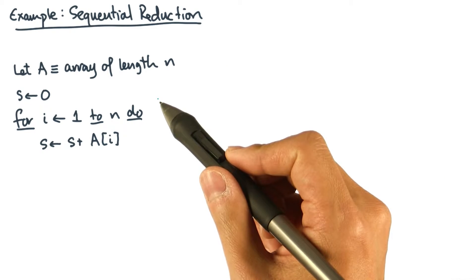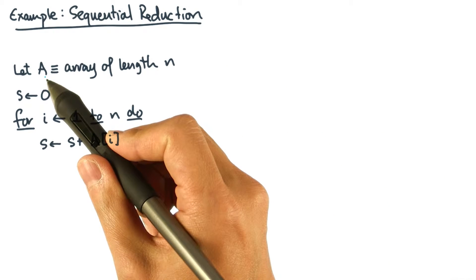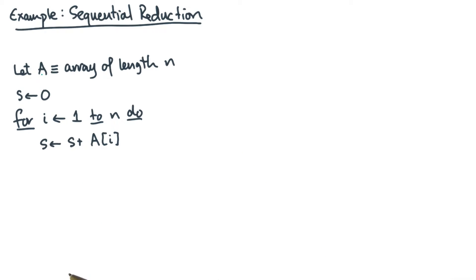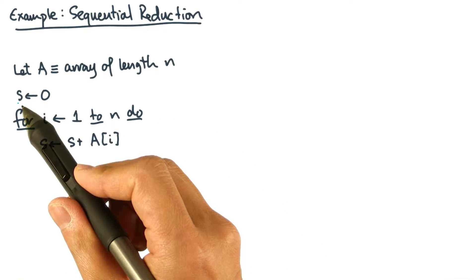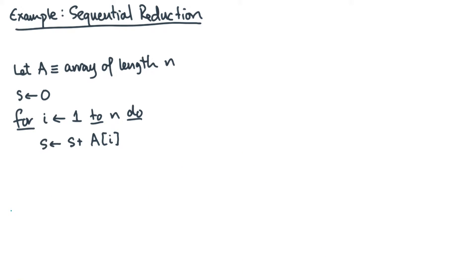So let's start with this example program, which, given an array A, computes the sum of all of its elements. That sum will be returned in this value S. This operation is actually an example of a pattern called a reduction.